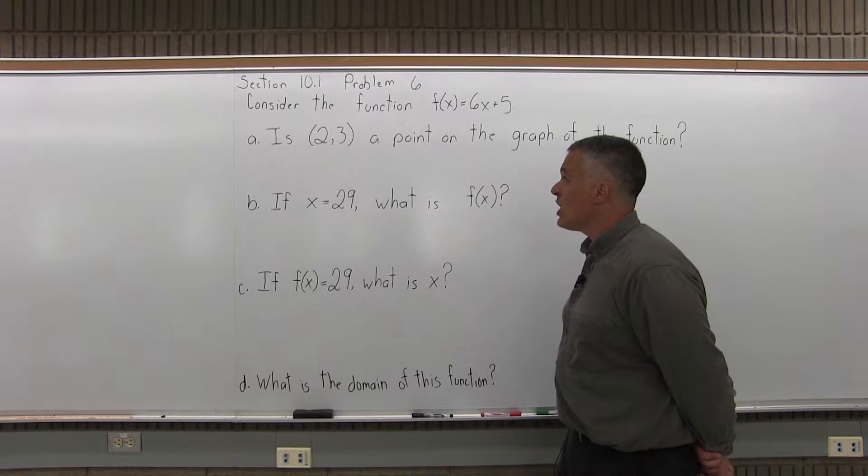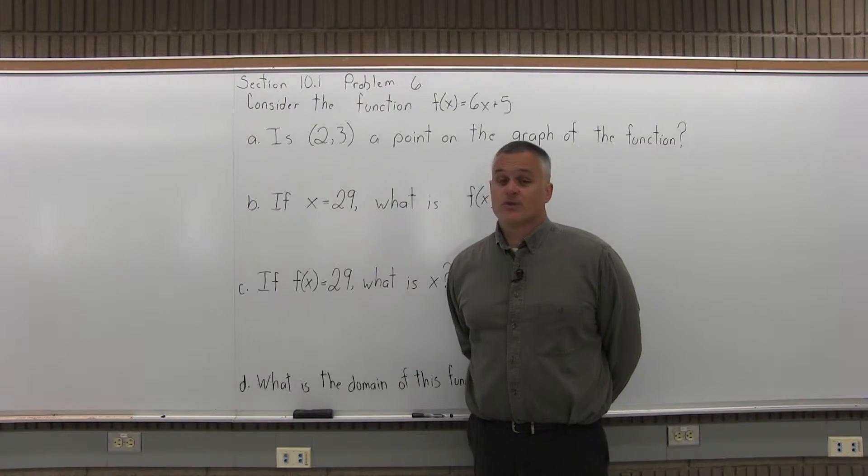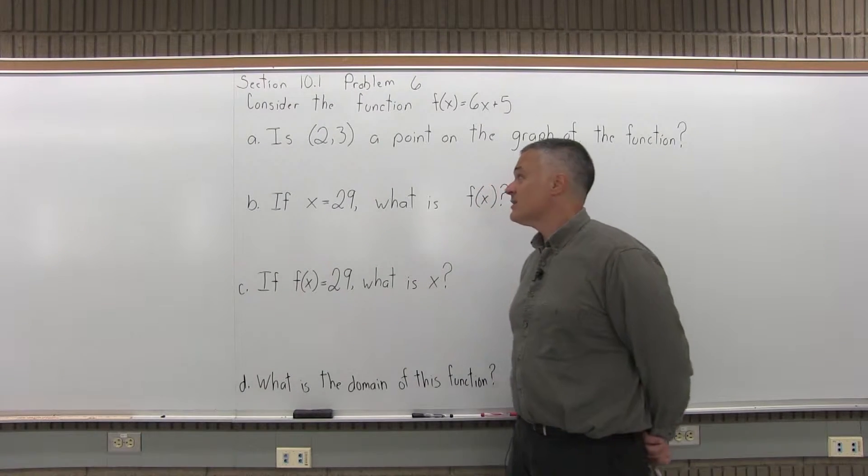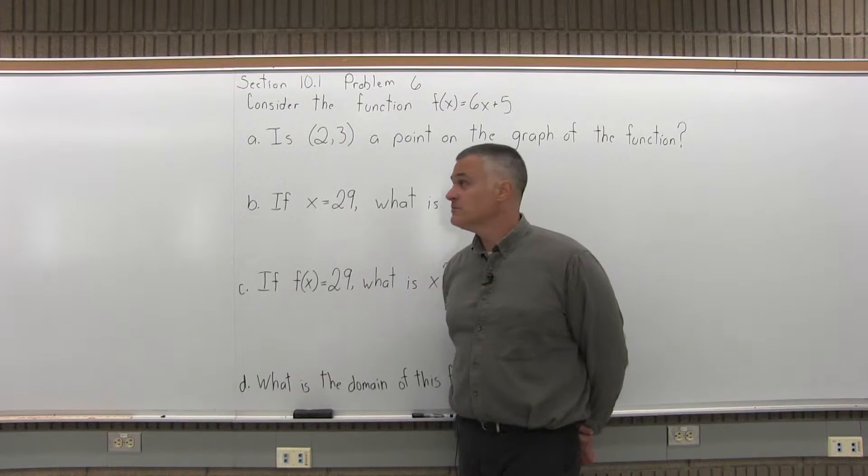The first question, part A, asks, is 2 comma 3 a point on the graph of the function? Well, we don't have a picture of the graph, but we can figure it out. Basically what it's saying is if you put in a 2 for this function, do you get out a 3? Well, check it.